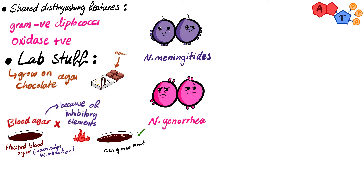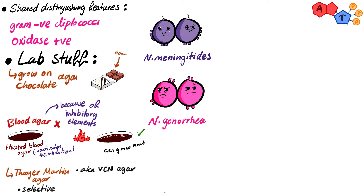The other medium used for Neisseria's growth is Thayer-Martin agar, which is a selective agar that only allows Neisseria species to grow while inhibiting other organisms. This is also known as VCN agar, referring to the antibiotics used to inhibit other organisms: vancomycin, colistin, and nystatin.